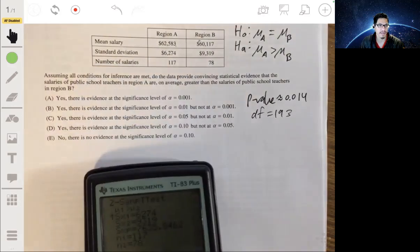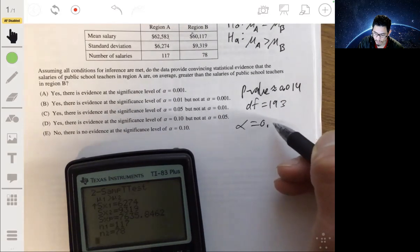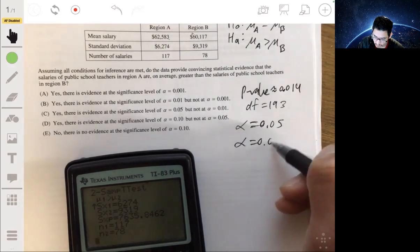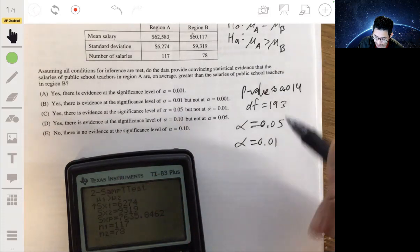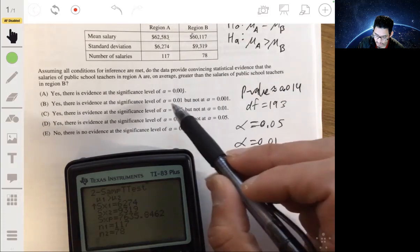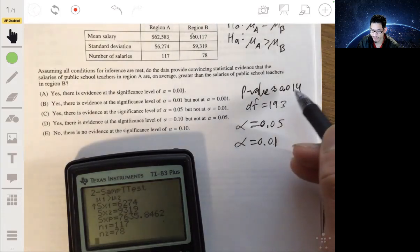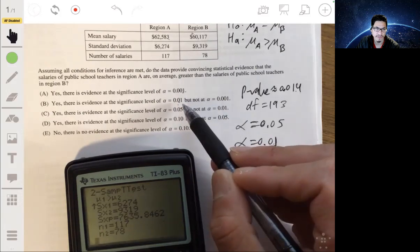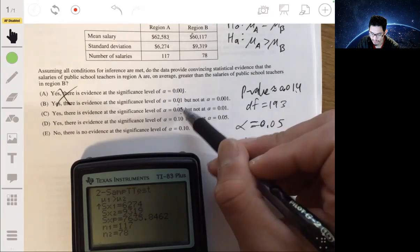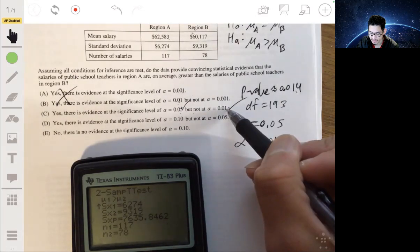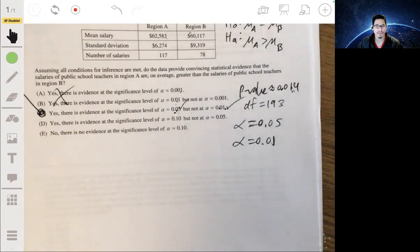Anyways, so we just calculate this and see, we get a P value of 0.014 degrees of freedom of 193. So let's see what would make sense because depending on our alpha level we would reject this at 0.05, but we would not reject it at an alpha of 0.01. So yes, there's significant level alpha equals 0.05, because this is less than 0.05, but not at 0.01. Yeah, because this is, it wouldn't be at this, but it would be at that because this is less than that. That's not less than that. The answer would be C. So there you go. I hope that helps.